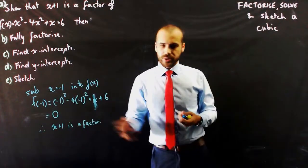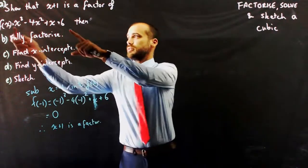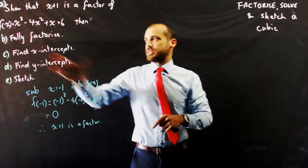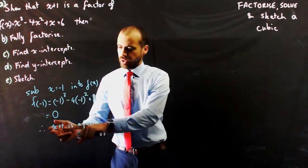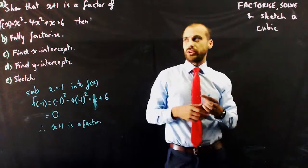So, if x plus 1 is a factor, that means that x plus 1 times something else will give me this. And so, if I take this and divide it by this, I'll find out what the something else is. And for that, we do polynomial division.